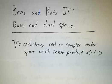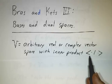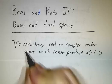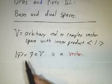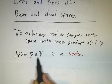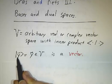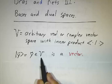Let's suppose that V is some arbitrary real or complex vector space with an inner product. As always, we'll think of the elements of V as being vectors, and when I write a ket, the ket y is the vector y, it's an element of V.